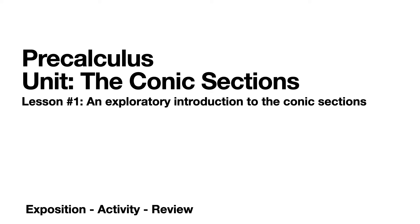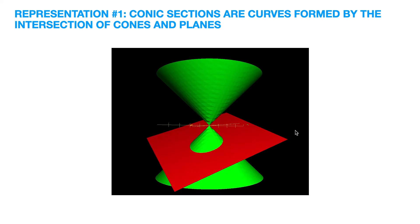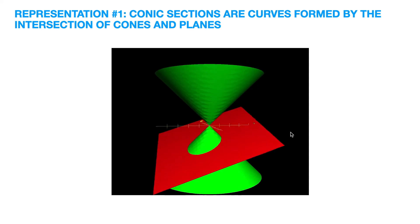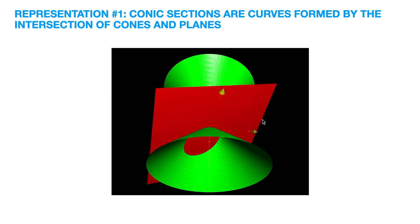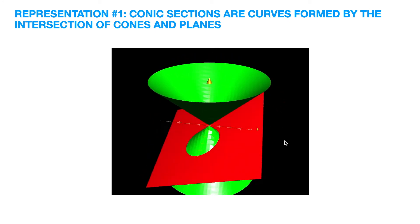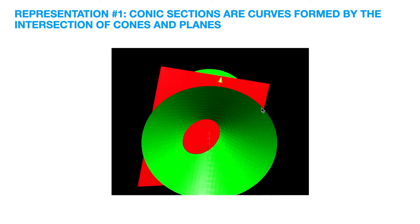Conic sections are mathematical objects that could be represented in different ways. Firstly, conic sections can be thought of as the curves that result from cones being cut by planes. Different shapes occur depending on the angle with which the plane cuts the cones.